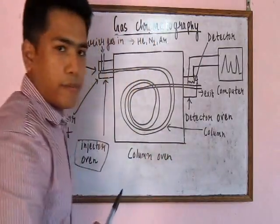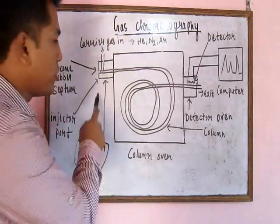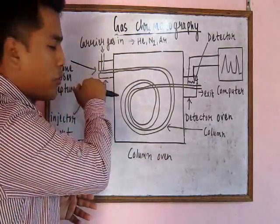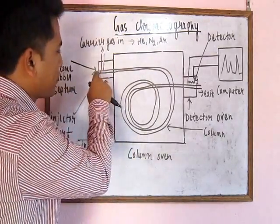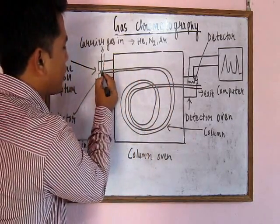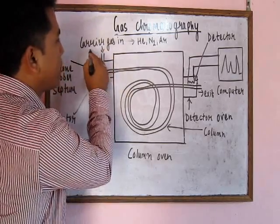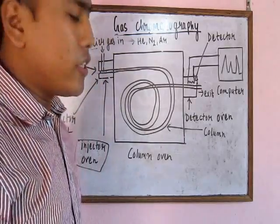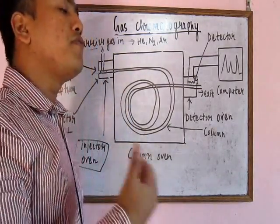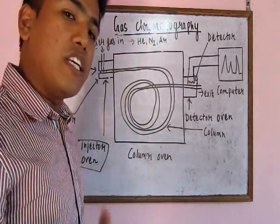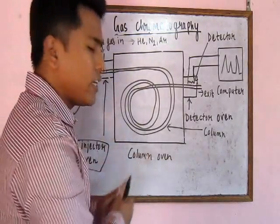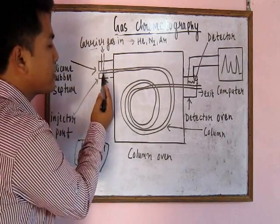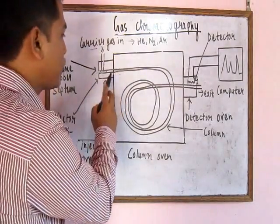In gas chromatography we use ovens: the column oven, the injector oven, and the detector oven. We put the sample here and inject it — when we inject the sample, the sample is vaporized. We use liquid as the sample; the liquid sample is then vaporized. The temperature of the oven is about 50 degrees more than the boiling point of the least volatile compound.